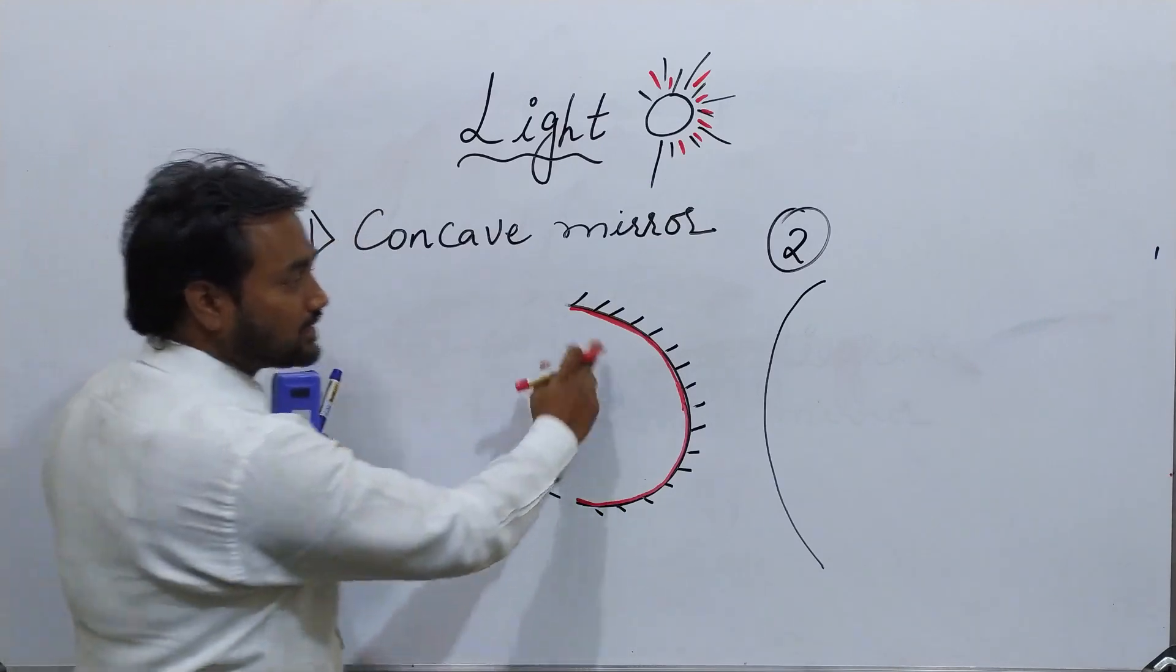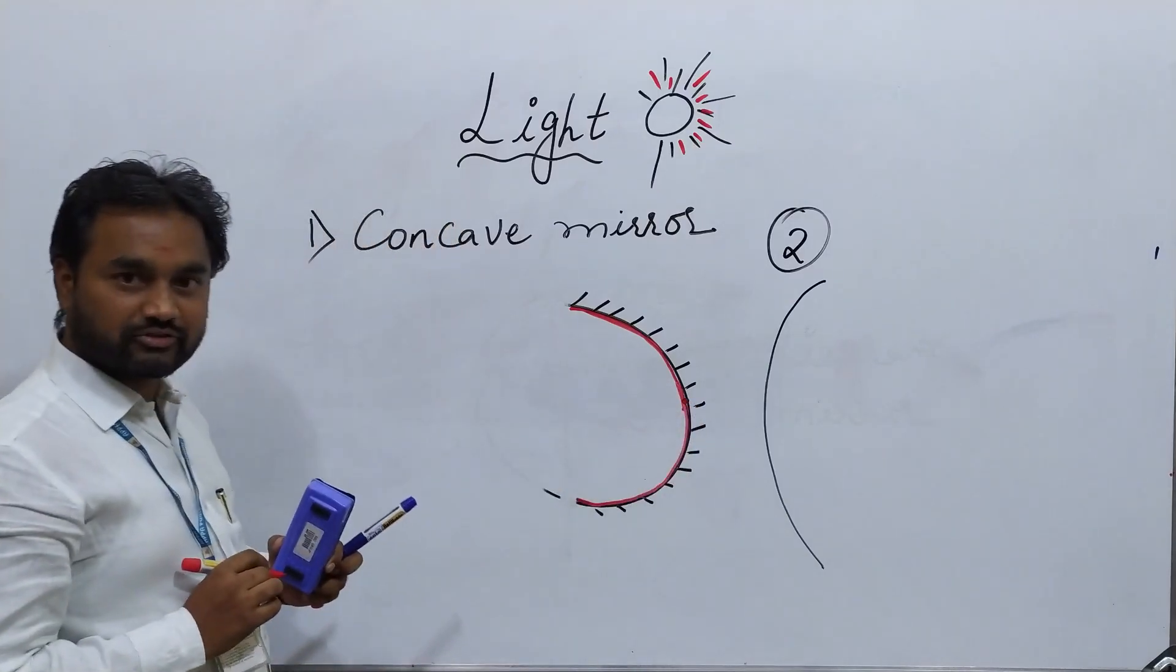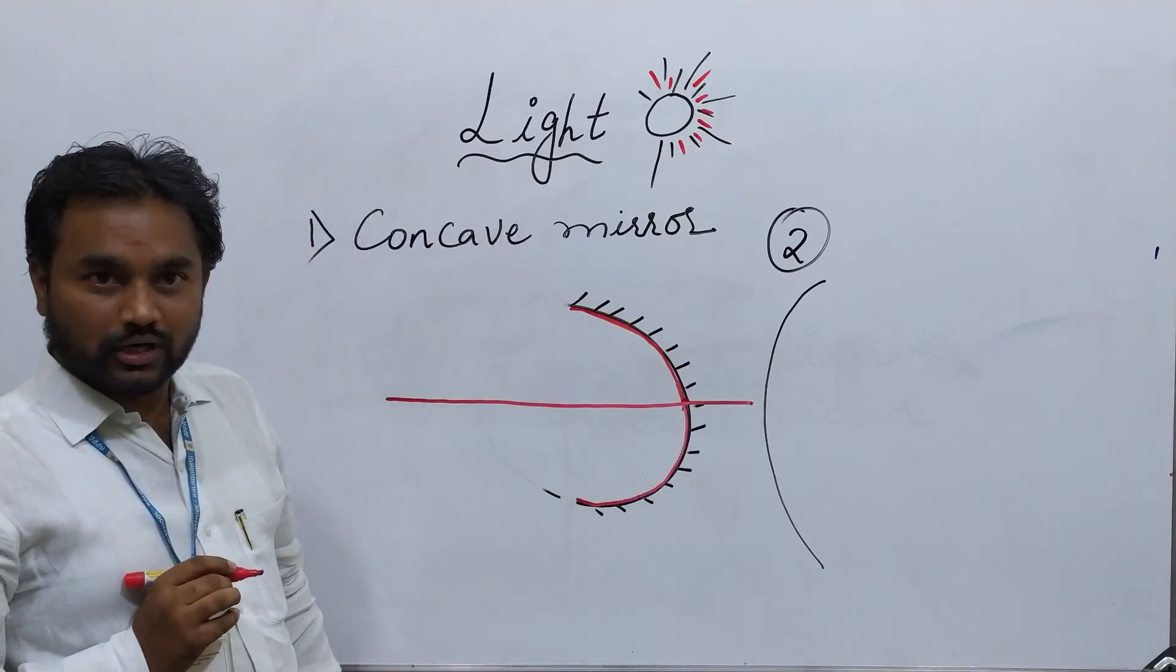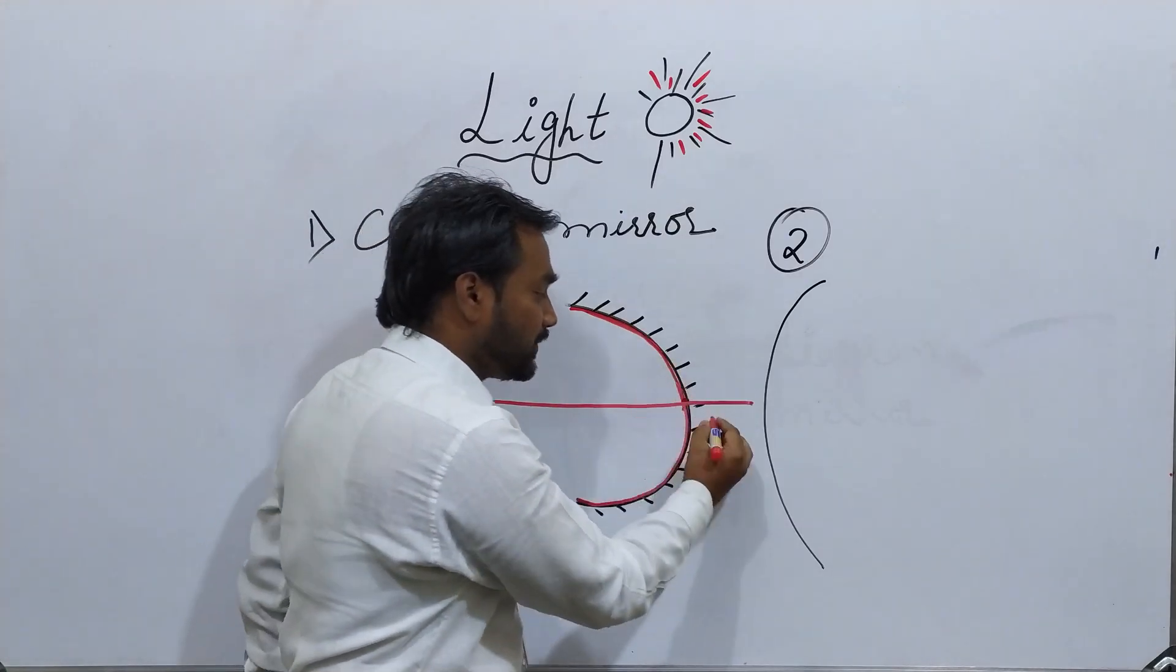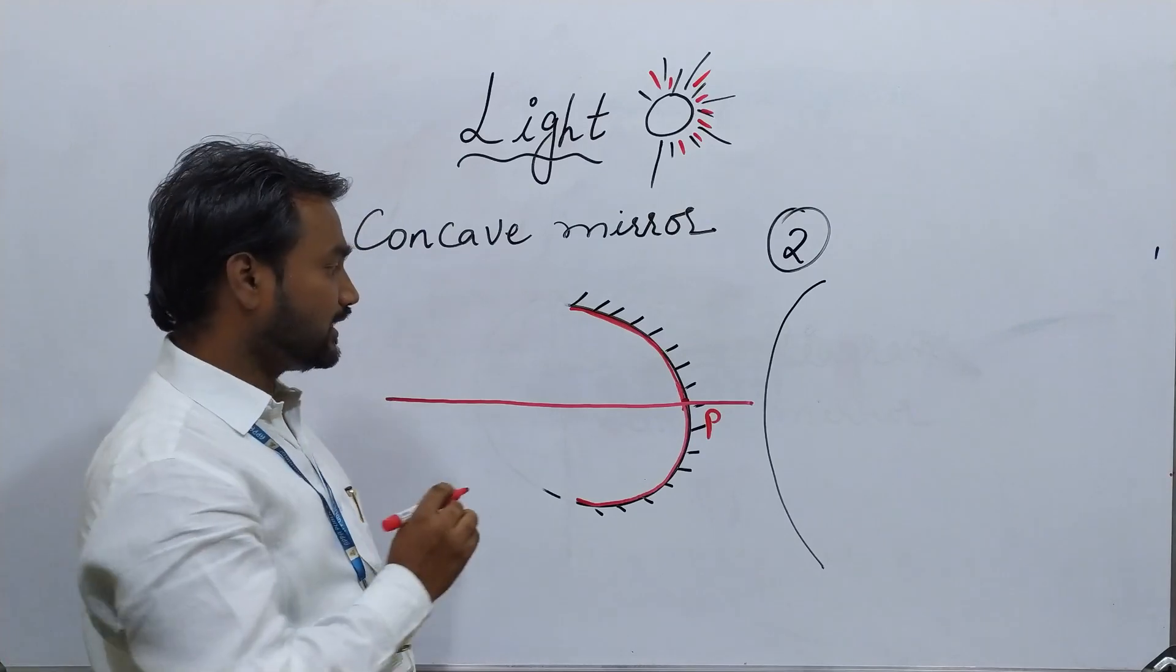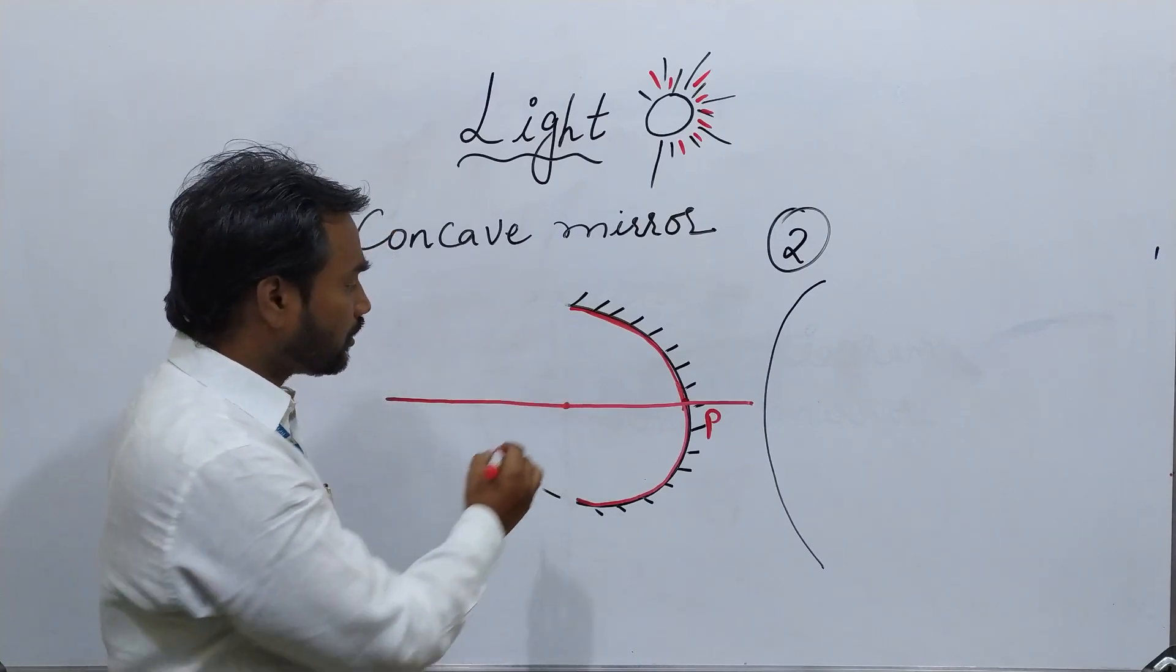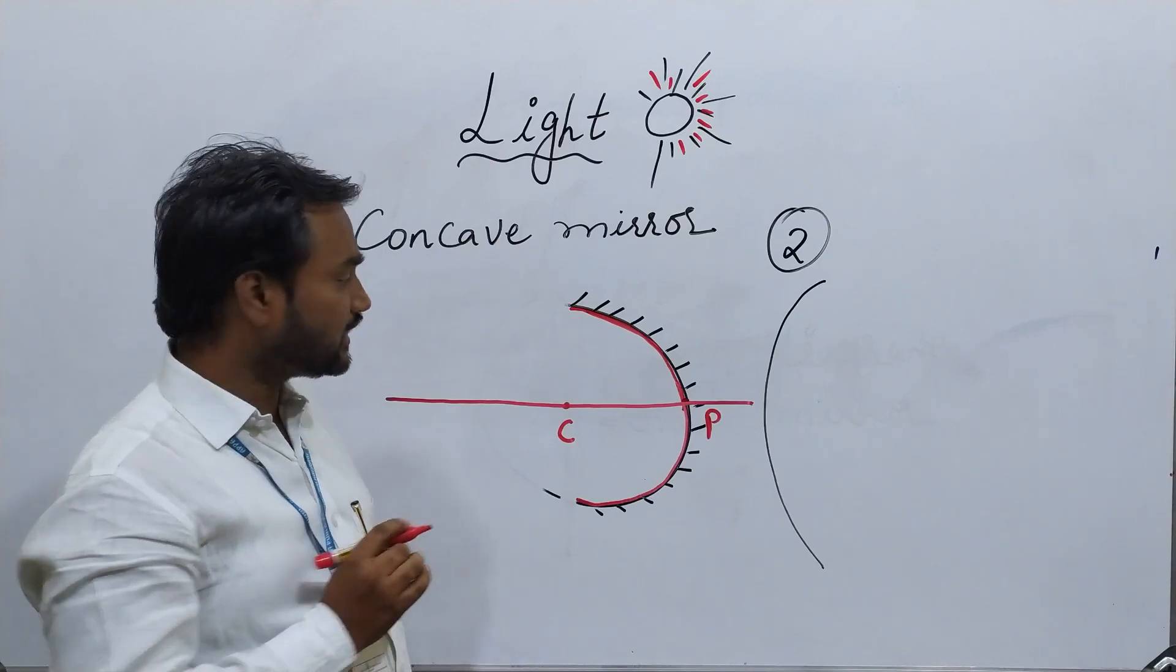Now if I have to draw, I will choose the center of this spherical mirror and I am going to draw a line, a straight line passing to this pole. This is the center of the spherical mirror, which we call it as pole. As I said, this is the spherical mirror. The center of this spherical mirror I call it as center of curvature and I represent it by C.